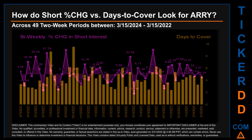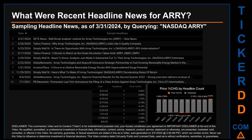Zooming out, I looked across 49 two-week snapshots from latest found March 15, 2024 to oldest found March 15, 2022. In the graph, I overlaid bi-weekly percentage change in short interest against days to cover across these 49 snapshots. The average percentage change of short interest was about 1.78%. Other interesting data points: the largest percentage increase was 32.09%; the largest percentage decrease was minus 25.46%, occurring once on June 15, 2023. The average days to cover was about 4.38; the biggest days to cover was 9.55, occurring once on October 14, 2022.